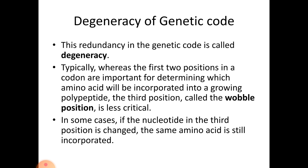This redundancy in the genetic code is called degeneracy. Typically, whereas the first two positions in the codon are important for determining which amino acid will be incorporated into a growing polypeptide, the third position is called the wobble position and is less critical. In some cases, if the nucleotide in the third position is changed, the same amino acid is still incorporated.